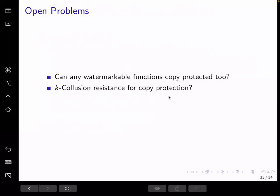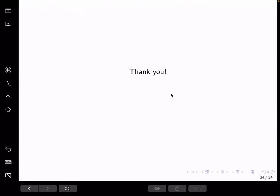And in the setting of public key quantum money and secure software leasing, actually it's easy to show K collusion resistance. For example, by adding a digital signature to the money scheme or assuming collusion resistant watermarking scheme for the secure software leasing. However, in copy protection, it's not clear how we can prove the security, even for the oracle setting. And that's it. Thank you.